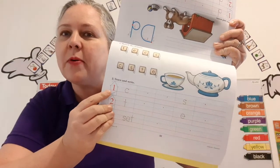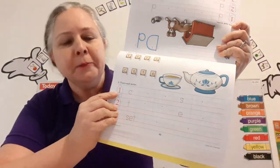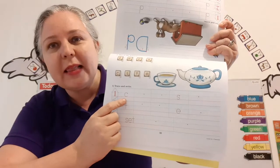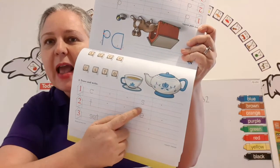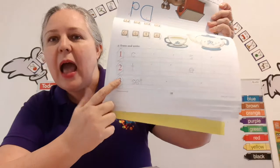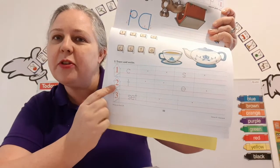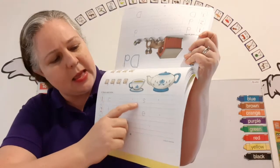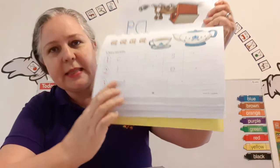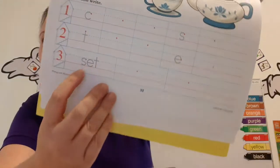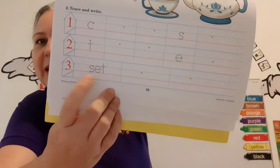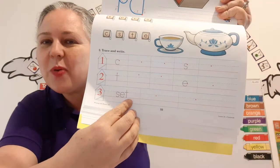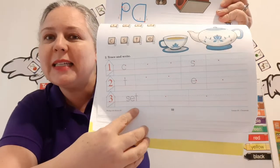On line number one, you're going to trace and write the letter C and the letter S. On line number two, you're going to trace and write the letter T and the letter E. And what does this word say? Can you read it for me? Set. That's right — we're going to write the word set.